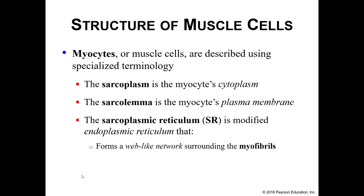Muscle cells themselves we call myocytes — "myo" meaning muscle, "cyte" meaning cell. We have a few terms that are going to come up over and over in the next several lectures covering muscles. Your cytoplasm within a myocyte we call the sarcoplasm. The plasma membrane of your myocytes we call the sarcolemma.